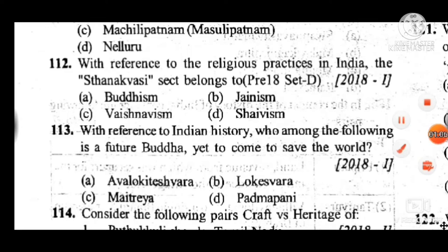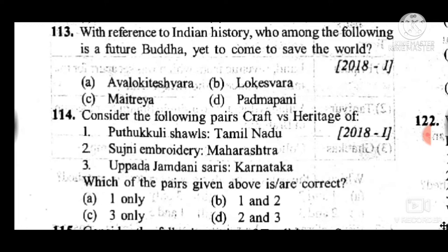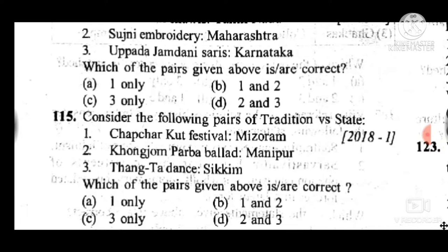Question 114: Consider the following pairs of craft versus heritage — answer is A, one only; only one statement is correctly mentioned. Question 115 (tradition versus state): Answer is B — one and two only are correct.